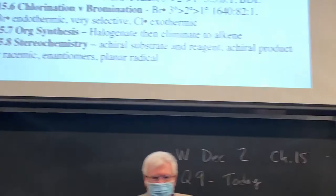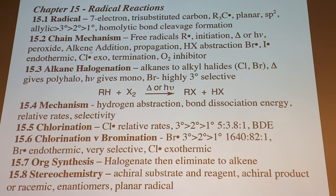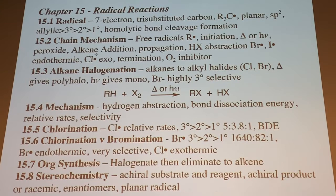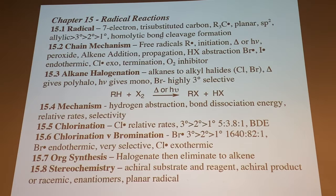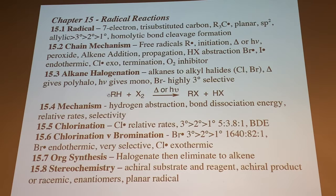Let's go to the overhead and go through the topics. There are only four new reactions to learn for test four. Chapter 12 had eight reactions, so there are 12 reactions total for test four. We'll talk about radicals — seven electrons, neutral, and their stability. Then we'll talk about alkane halogenation: taking alkanes and treating them with bromine or chlorine with heat or light to make alkyl halides. Alkanes are more abundant from petroleum and cheaper than alkenes, making this an important industrial process.